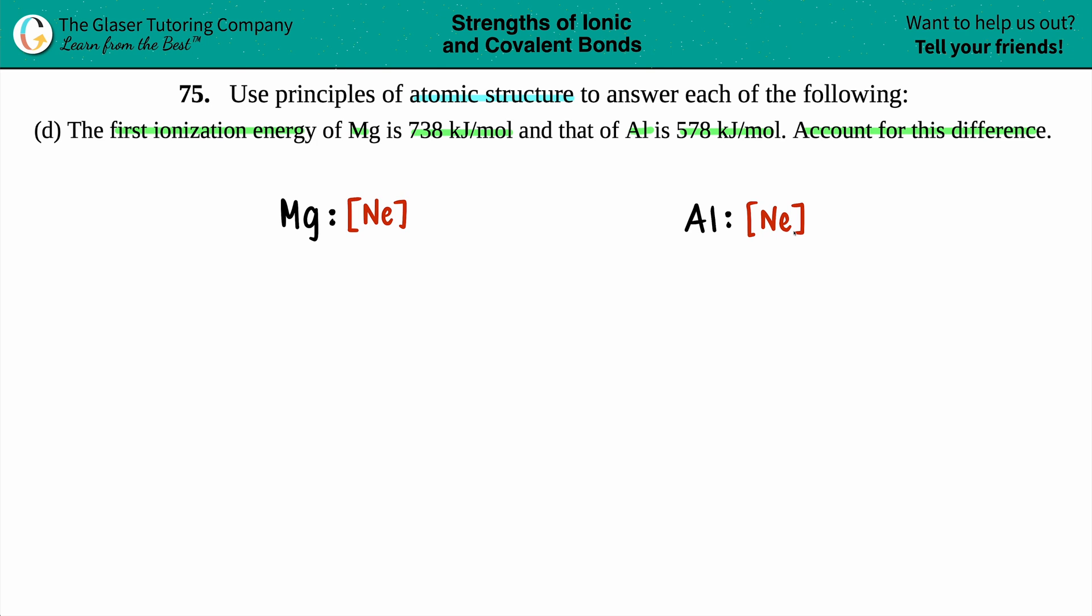They both have neon as their noble gas, and I'm just going to pick it up from there. So magnesium is going to now start at 3s and 3s². Aluminum will be one box over, so it has one more electron, so it has 3s² and 3p¹.